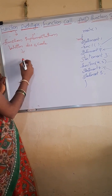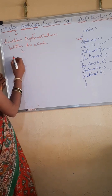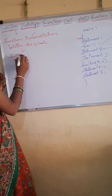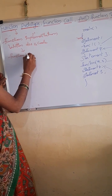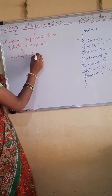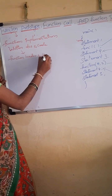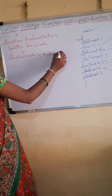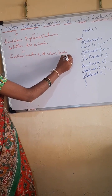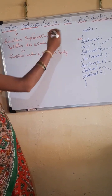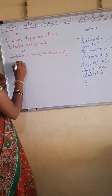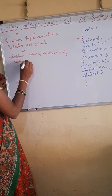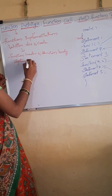There are two types in function definition: function header and function body. Now we will see the syntax for function definition.